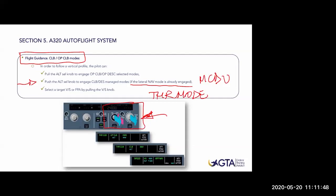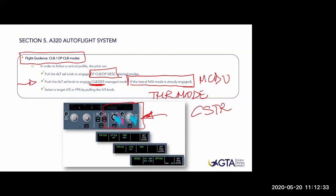Open climb and open descent are achieved by pulling the altitude mode. The key difference with open modes versus managed modes is that altitude constraints in the route - for example, don't cross a point above flight level 150 - are only automatically complied with when flying in climb or descent managed modes. In open mode, or when not in managed lateral mode such as flying on a selected heading, those constraints will not be complied with automatically. So always pay attention to these details because this can lead to mistakes.